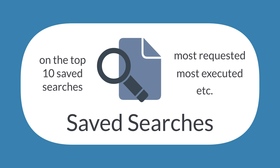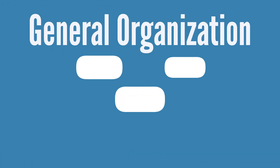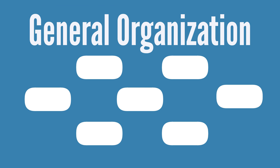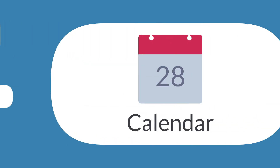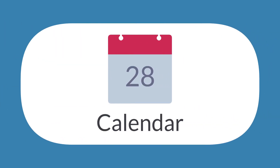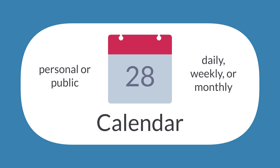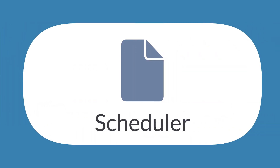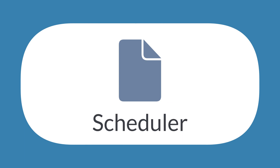In addition to the analytics portlets, there are seven portlets that help you stay organized and on task. Each of these can be represented on your dashboard only once. The calendar portlet allows you to see either your personal calendar or a public calendar in a daily, weekly, or monthly view. The scheduler portlet, on the other hand, allows you to see the schedules of others in the company.